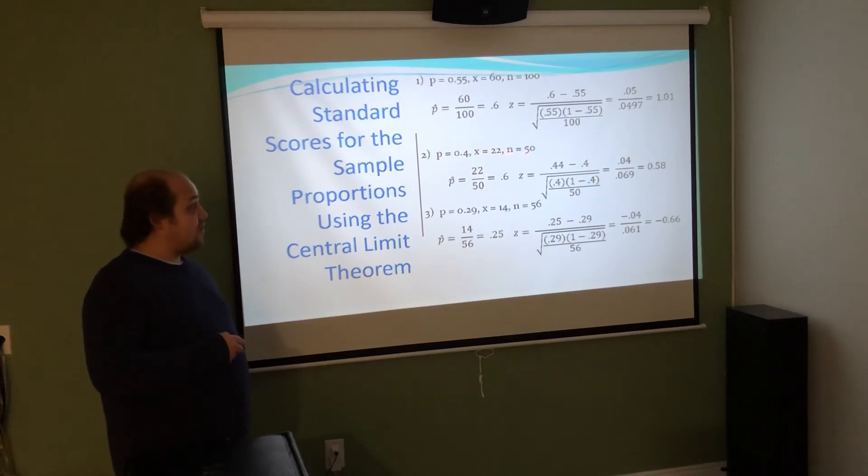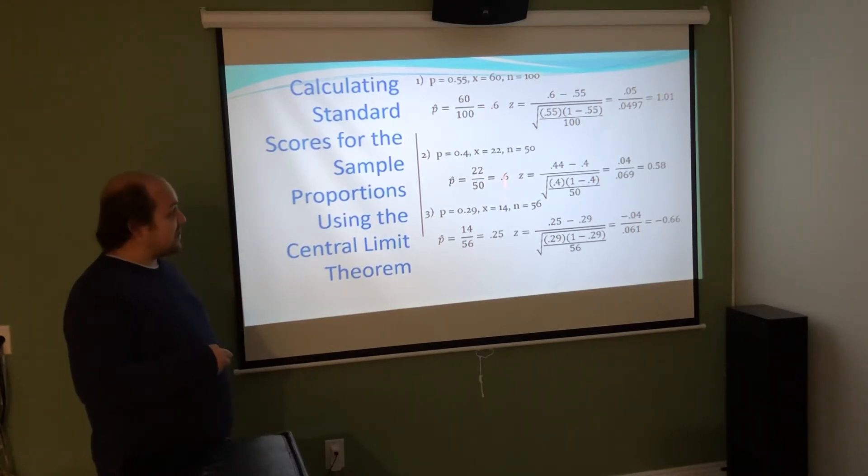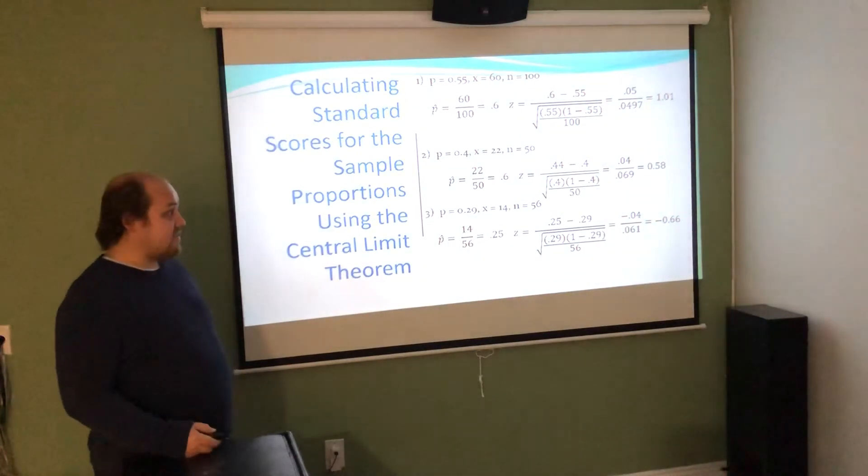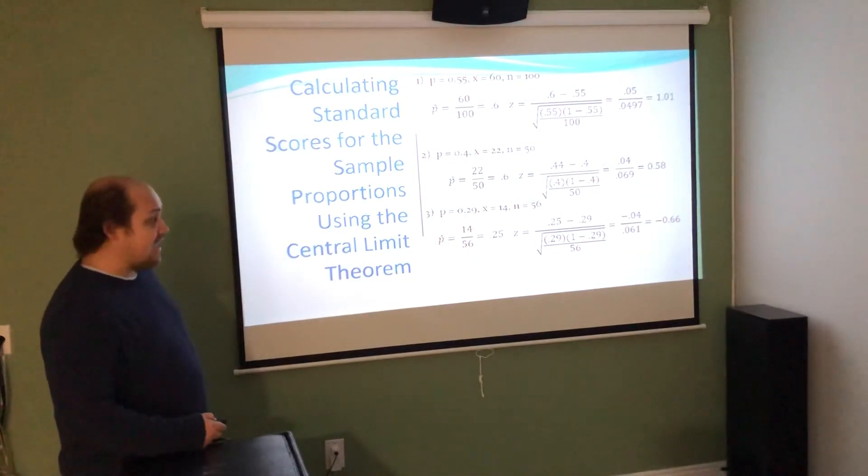For number 2, we take x over N to get p hat of 0.44, not 0.6. I need to correct that. This should be 0.44 minus the given p of 0.4 over the root of 0.4(1-0.4) over 50, which ended up being a z-score of 0.58. For the last one, p hat is 0.25, which is lower than p. It's okay to get a negative number here - it will lead to a negative z-score like this does, negative 0.66.